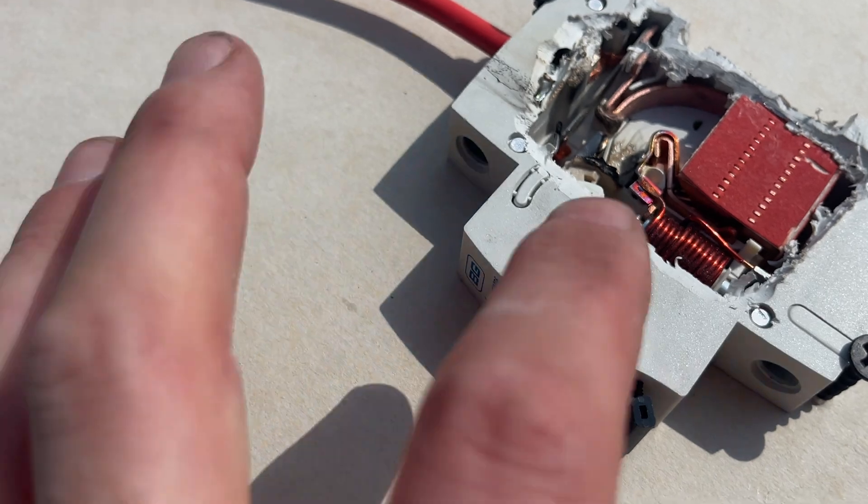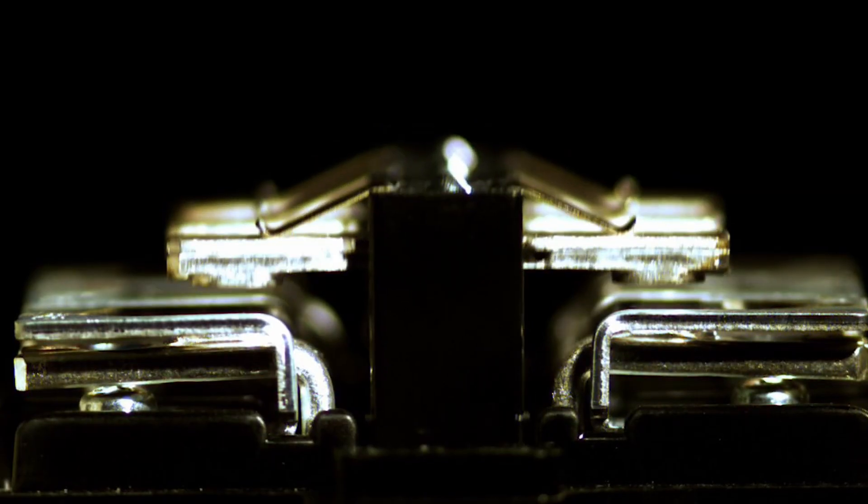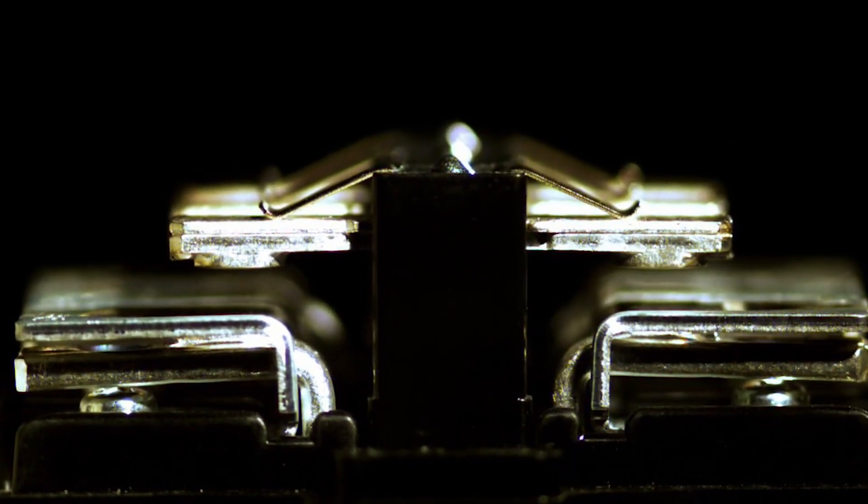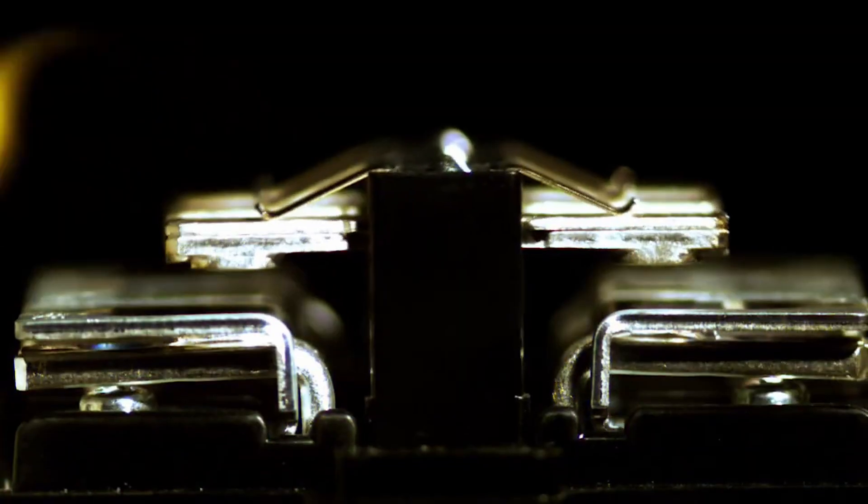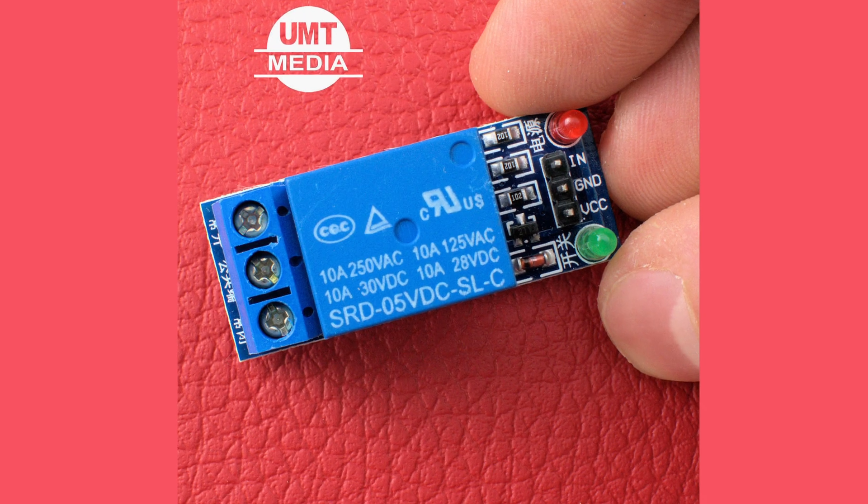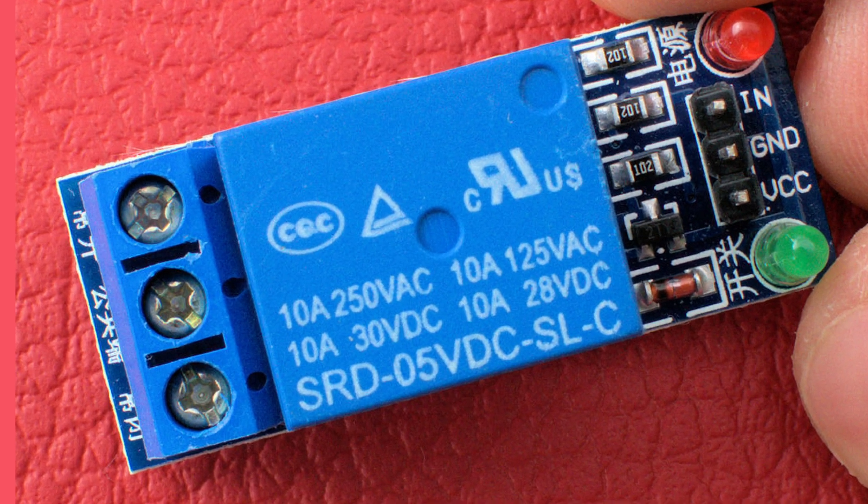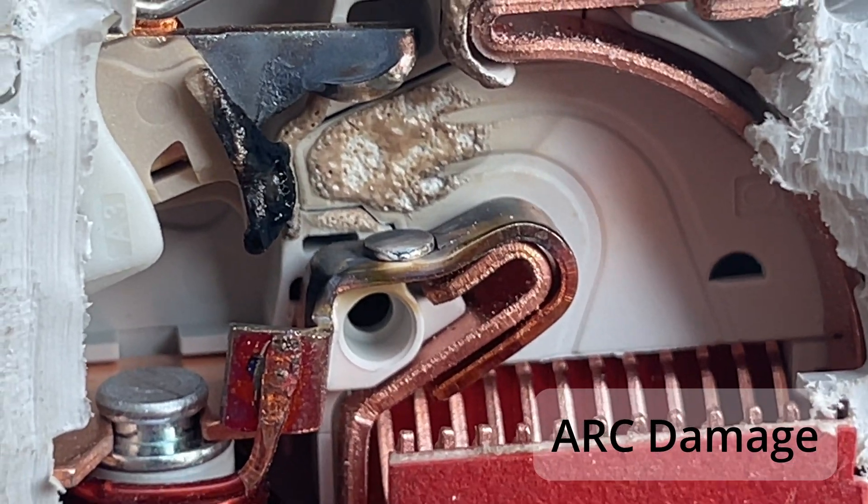The same process goes for not just MCBs, but any sort of connection device that's designed to break a circuit, so maybe relays or isolators. You'll find that quite often a relay can have a DC rating, but it's often a lot, lot lower than what you'd expect for AC and it's all down to this breaking the contact.